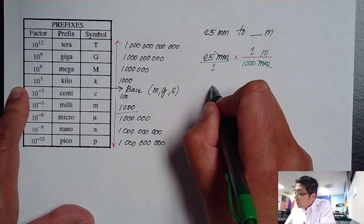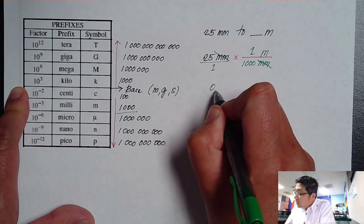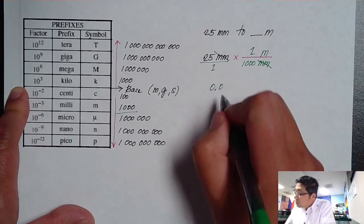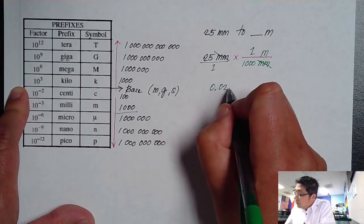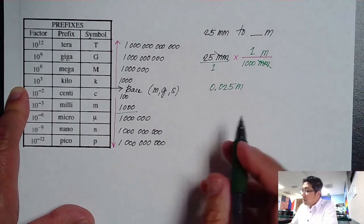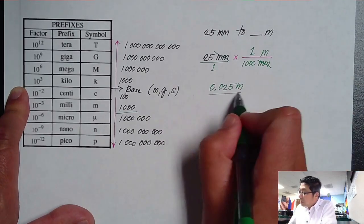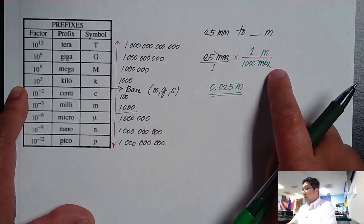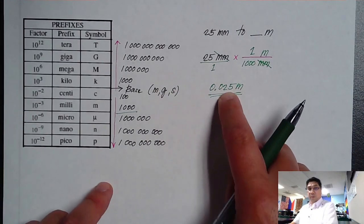Well, sure, we will get an answer that is equivalent to 0.025 meter. So for every 25 millimeter of measurement, you will get an answer that is equivalent to 0.025 meters.